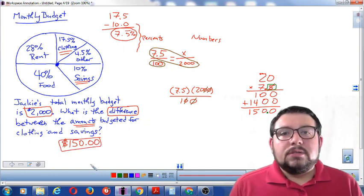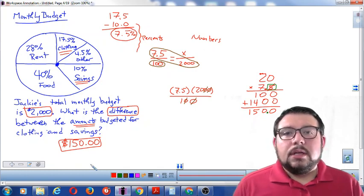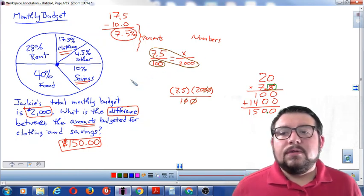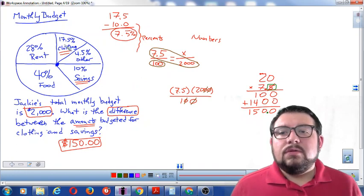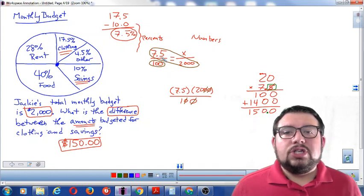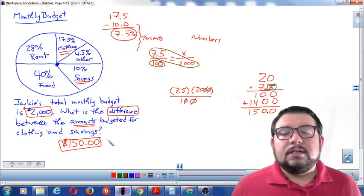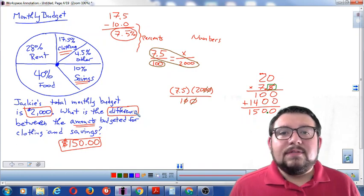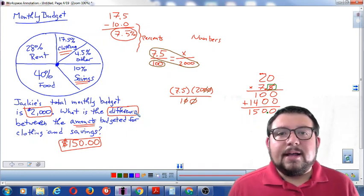So today we learned how to change percents into actual numbers using a proportion. This is a review for the TSI. What did we do? We subtracted because it said difference, we figured out the difference, and then we changed that percent, 7.5 percent, into an actual amount using cross multiply and divide. Final answer was 150 dollars. Thank you for watching. I hope you enjoyed and learned something today. Don't forget to like and subscribe and to visit the website at www.grassymath.com.